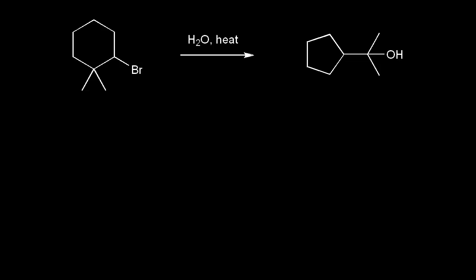Here's another SN1 carbocation rearrangement, but this one's pretty challenging. So if we look on the left, this is our starting alkyl halide, and we're heating this alkyl halide with water to produce this tertiary alcohol on the right.